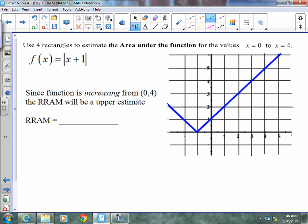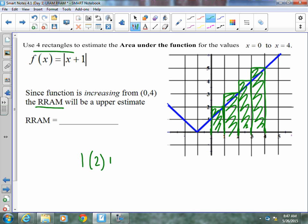Now the next example is similar, only they want us to use four rectangles still, this time an RRAM, which means right rectangle approximation model. Again, from 0 to 4 means we're going to need rectangles that are 1 wide. This time, they're going to be as tall as the right side. You notice on this one, being as tall as the right side means they're going to be a little taller than the actual line, so it's going to be an overestimate. We're going to get 1 times 2 plus 1 times 3 plus 1 times 4 plus 1 times 5, which is approximately 14.